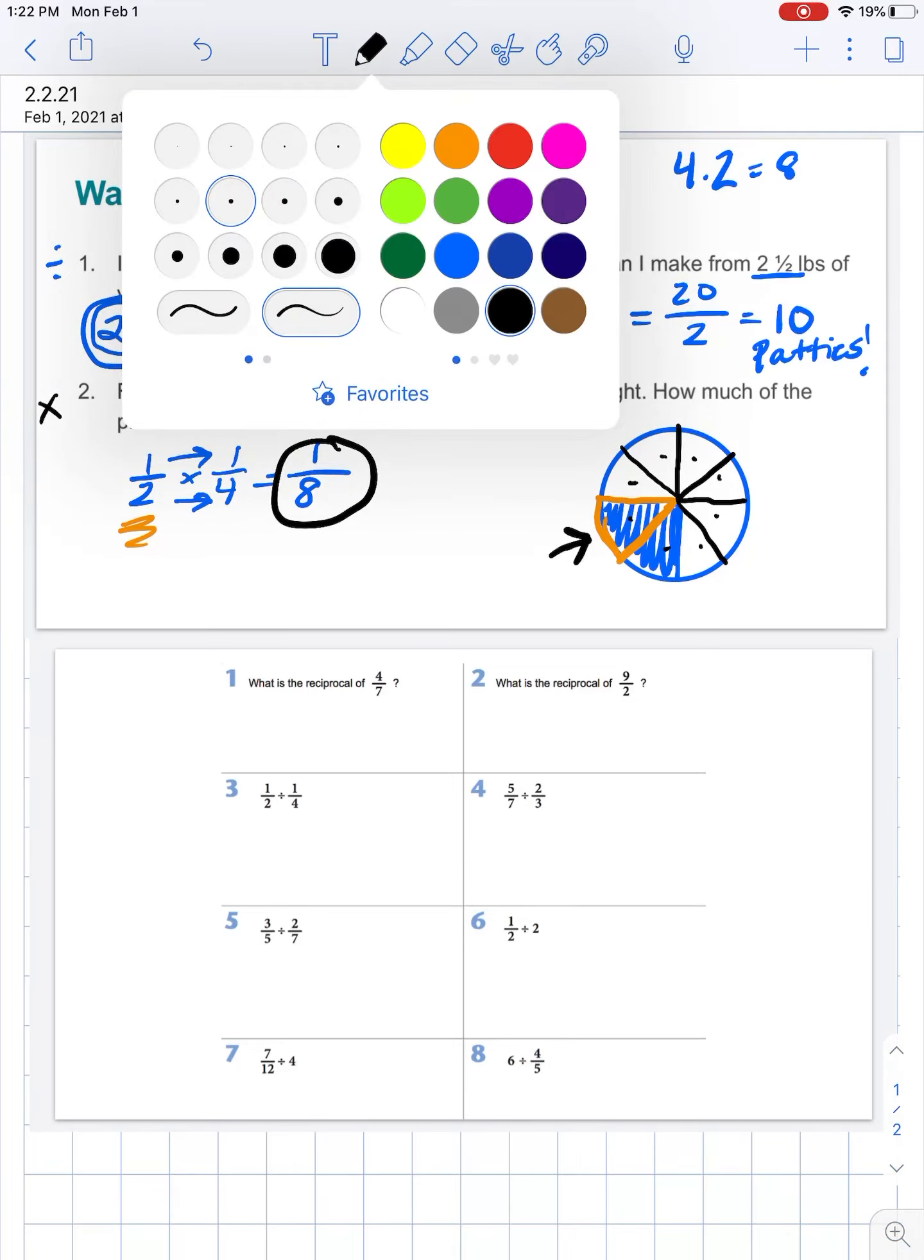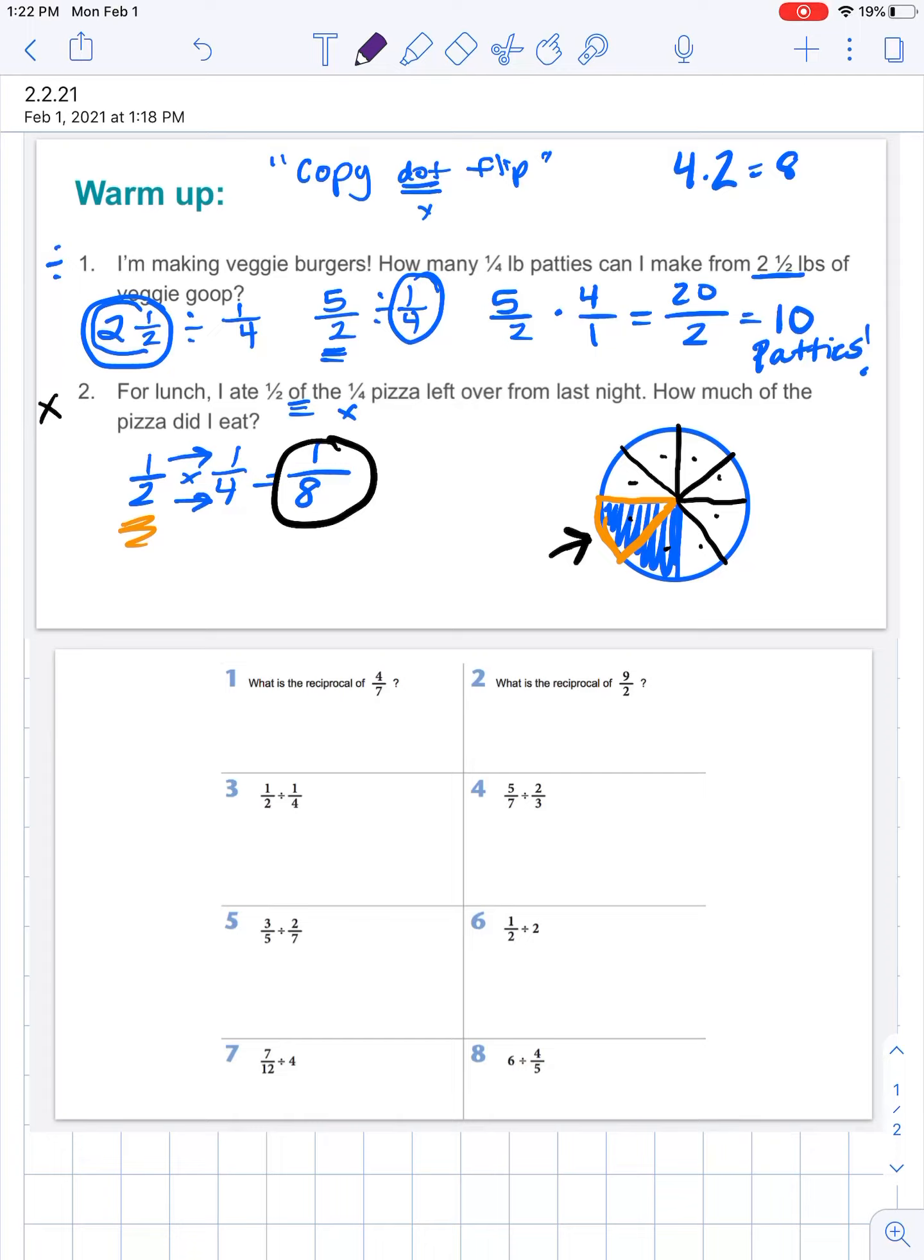Let's switch up the color again. On this second page of kind of putting some of this division into practice, the first one says what is the reciprocal of four sevenths? Reciprocal just means the opposite. We're going to flip it. When we think about our division, that copy dot flip, that flip is the reciprocal. The reciprocal of four sevenths is seven over four. What's the reciprocal of nine over two? Two over nine. We're literally just going to flip our numerator and denominator.